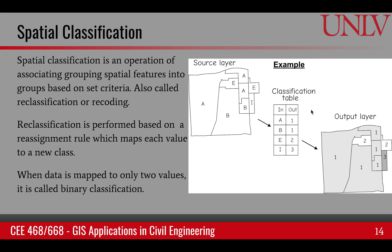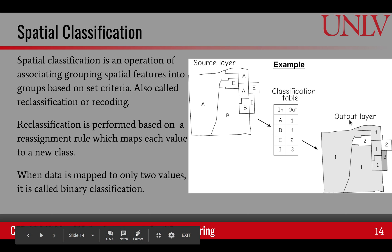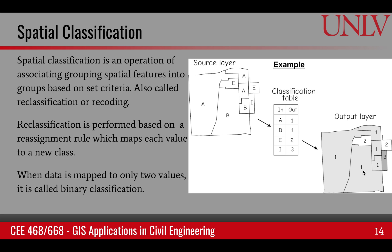For example, if we look at here, the source layer has features A, B, E, and I. This rule maps A to 1, B to 1, E to 2, and I to 3. Based upon this classification table, we create a new map with new values of the features. We have reclassified the input values to some output values, or in other words, recoded the values.